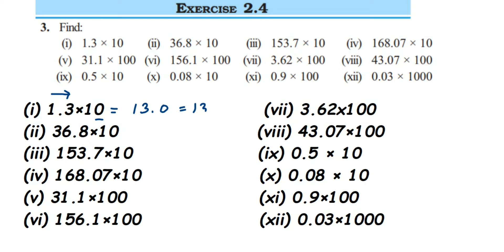The next one: 36.8 multiplied by 10. Again, we have only one zero, so the decimal point moves to the right side by one digit. This will become 368.0, which is the same as 368.